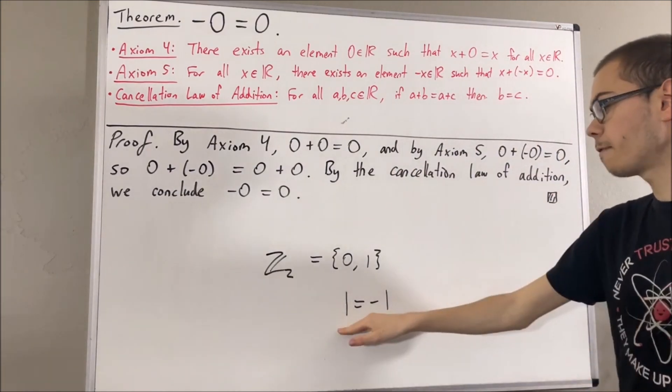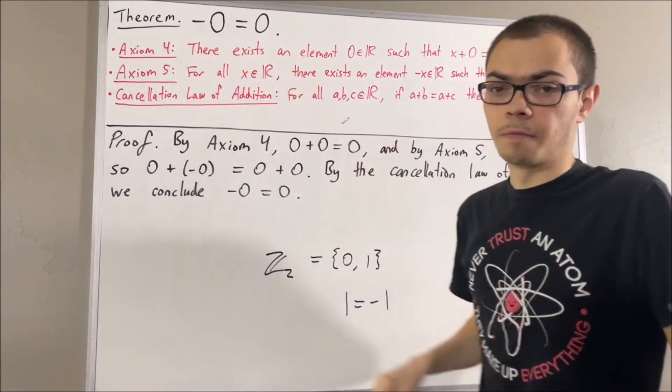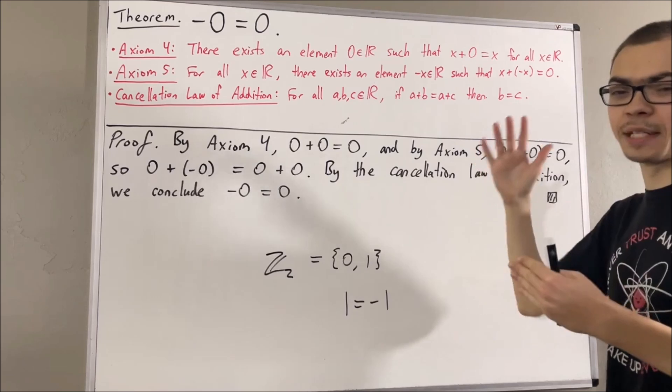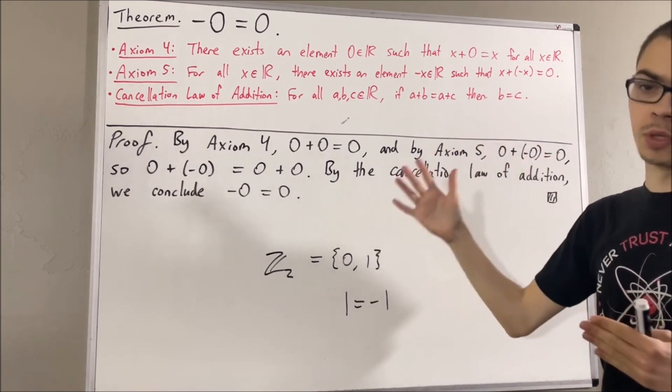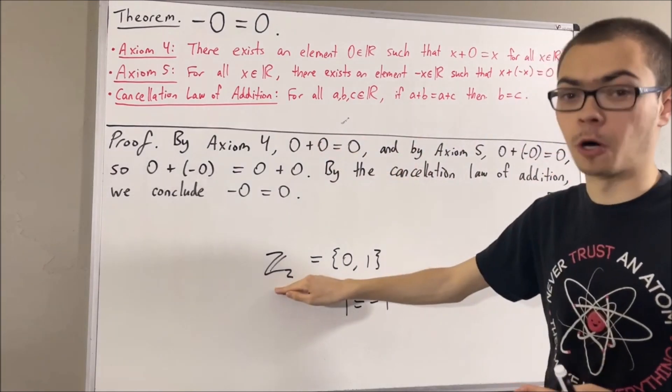So, we have an element equal to the negative itself, but it's not equal to zero. So, at this point, because we have only been working with axioms 1 through 7 for the real numbers, that means the real numbers could be Z2 for all we know.